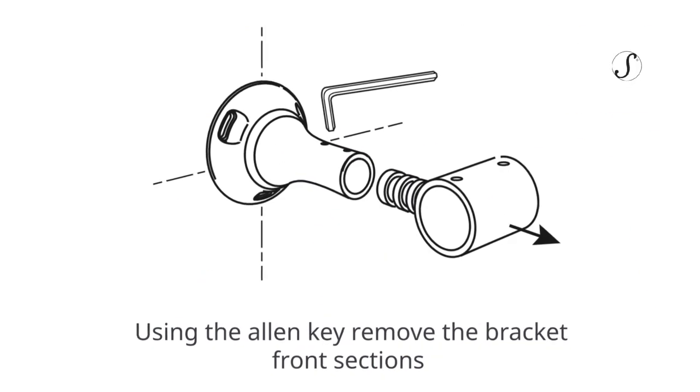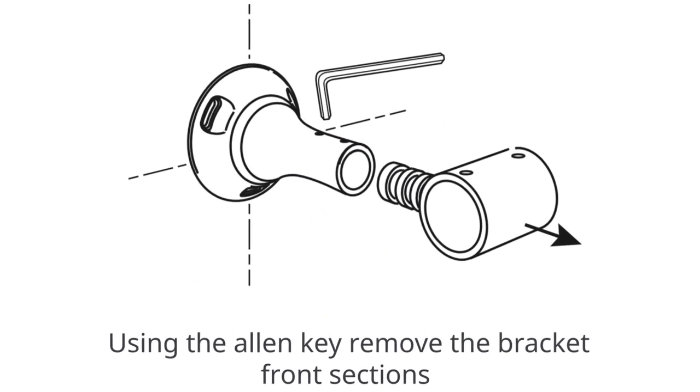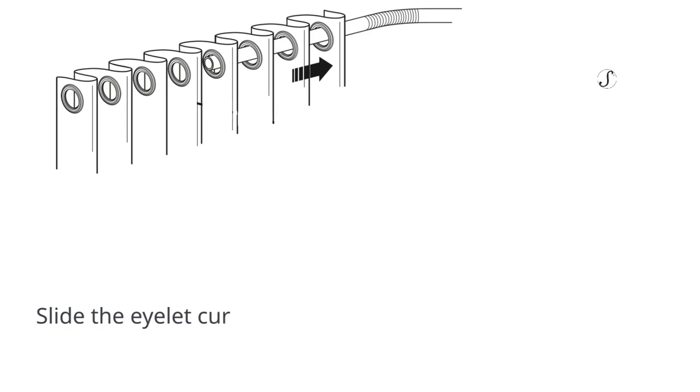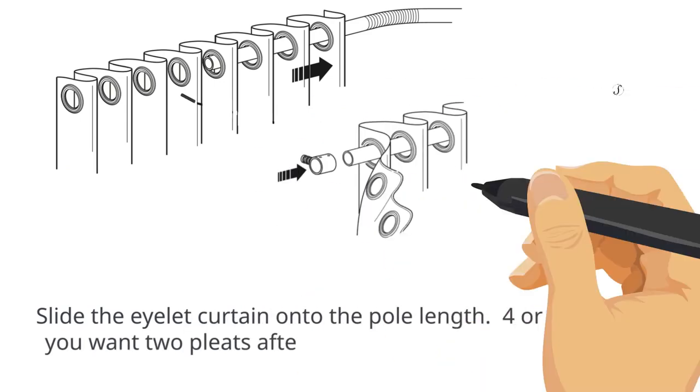Hanging the eyelet curtain. Using the allen key, remove the bracket front sections. Slide the eyelet curtain onto the pole length. Four or six eyelets if you want two pleats after the last bracket.